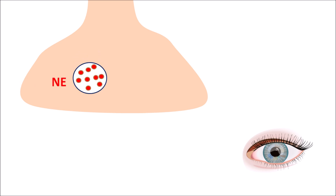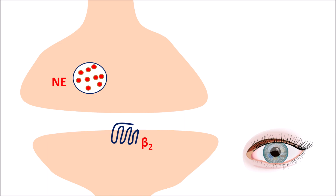Norepinephrine is released and acts on postsynaptic neurons equipped with adrenergic receptors such as beta-2 receptors, which are excitatory in nature, resulting in sympathetic stimulation. When an action potential reaches the presynaptic neurons, norepinephrine is released and acts on beta-2 receptors, leading to increased formation of aqueous humor. This results in more aqueous humor collecting in the anterior chamber of the eye, increasing intraocular pressure, which may cause blurred vision, double vision, or even loss of vision.